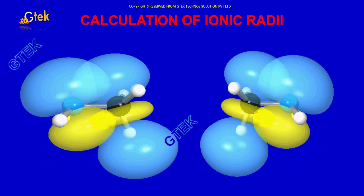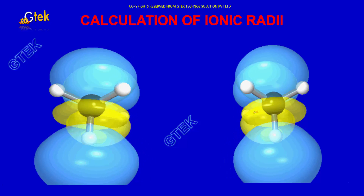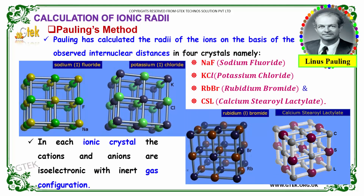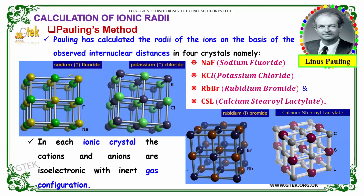Let's discuss the calculation of ionic radii further. Ionic radii was proposed and properly defined by the great scientist Linus Pauling. Pauling calculated the radii of ions on the basis of observed internuclear distances in four crystals: namely Sodium Fluoride, Potassium Chloride, Rubidium Bromide, and Calcium Sulfide.